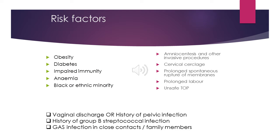Risk factors for sepsis include obesity, diabetes, impaired immunity or immunosuppression, anemia, black ethnic minority, amniocentesis or other invasive procedures, cervical cerclage, prolonged rupture of membranes, prolonged labor, unsafe termination of pregnancy, vaginal discharge or history of pelvic infection, history of group B streptococcal infection, and group A streptococcal infection in a close contact or family member.